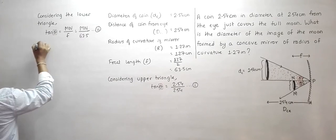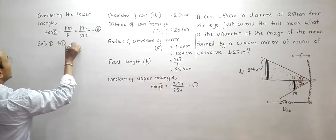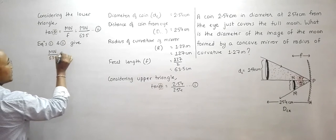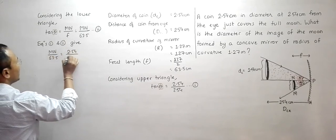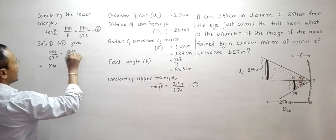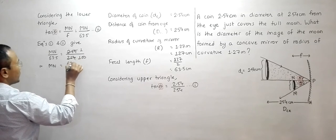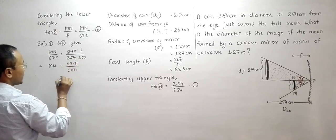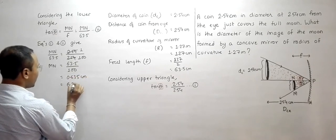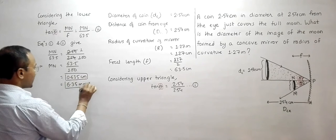From equations 1 and 2, we get MN / 63.5 = 2.54 / 254. Solving, MN = 63.5 / 100 = 0.635 centimeters, which is equal to 6.35 millimeters. The answer can be expressed in either centimeters or millimeters.